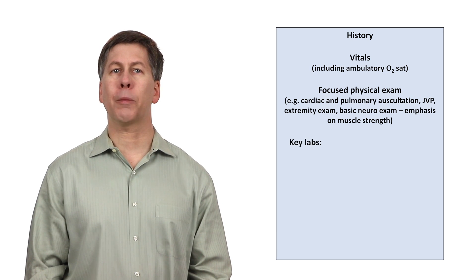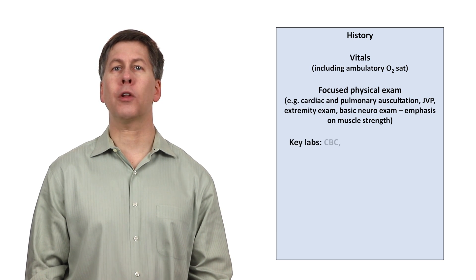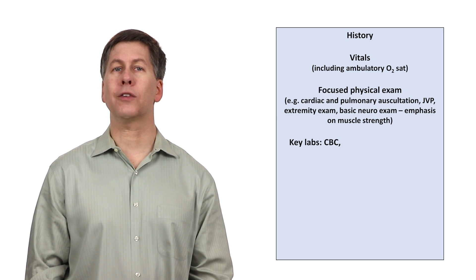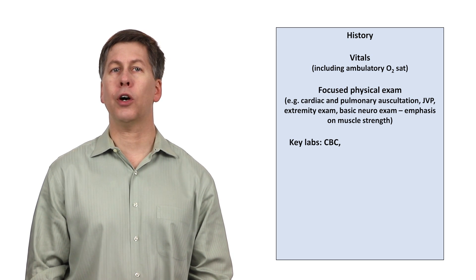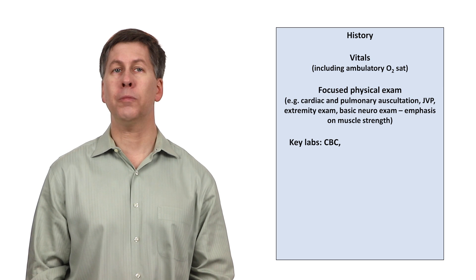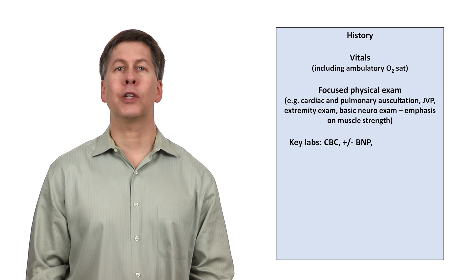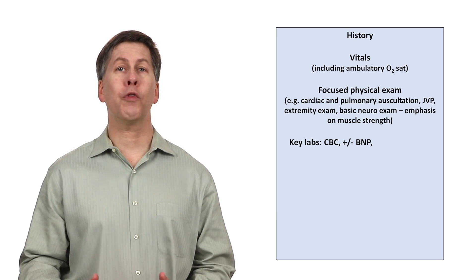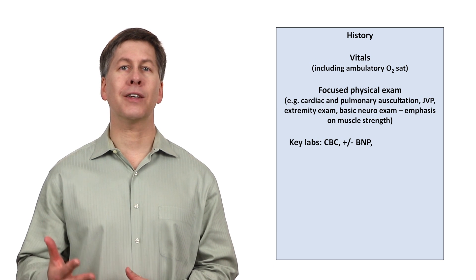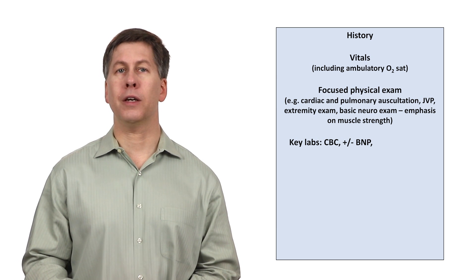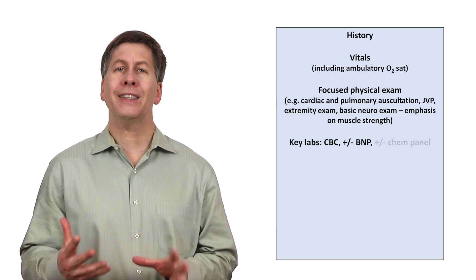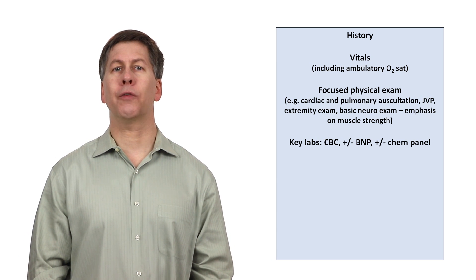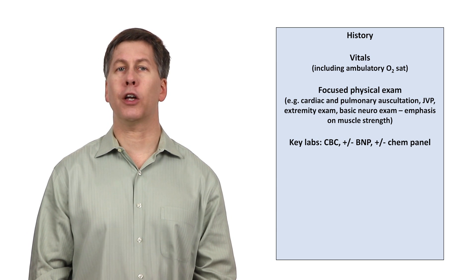Key labs when working up chronic dyspnea is predominantly a CBC to rule out anemia as either the primary cause or as a contributing factor. Consider sending a BNP, which stands for B-type natriuretic peptide, if the history is suggestive of heart failure, though there is some debate as to how diagnostically helpful the BNP is. Consider a chemistry panel to rule out renal failure in a patient presenting with volume overload.